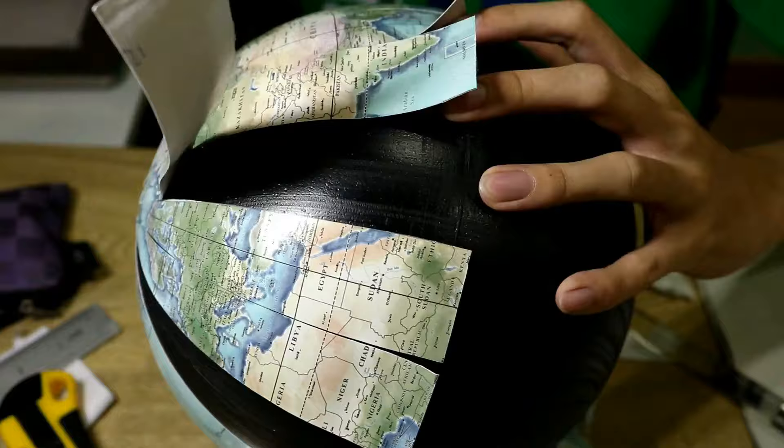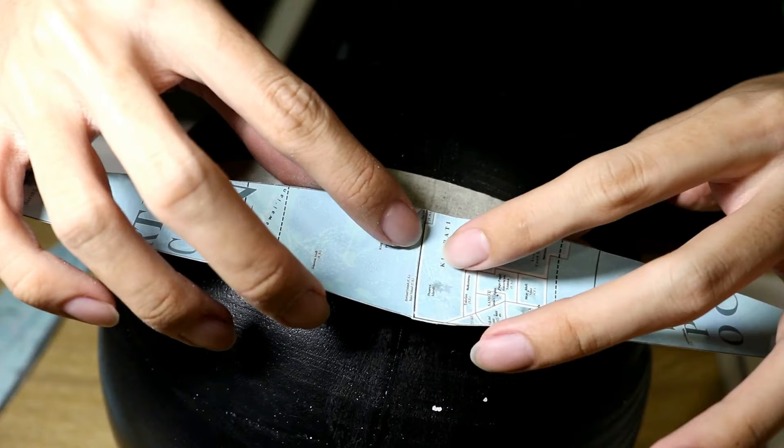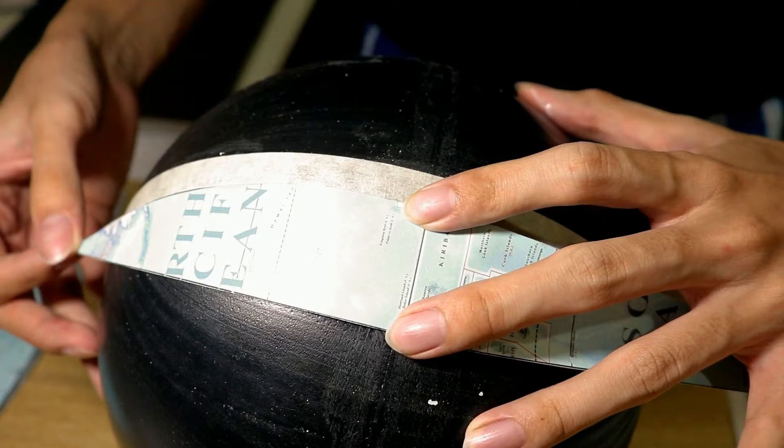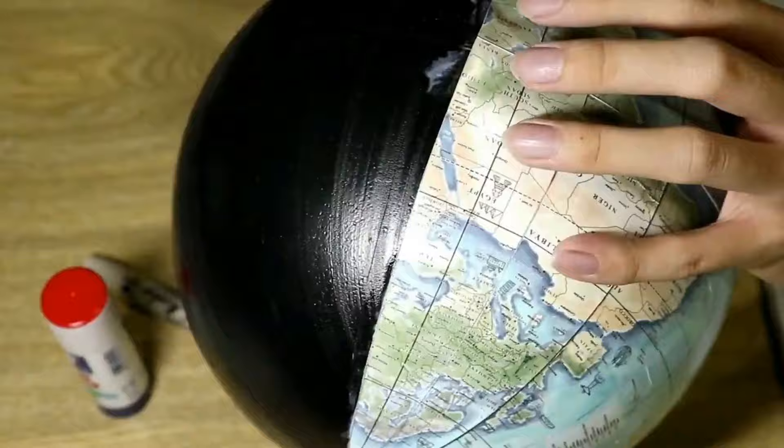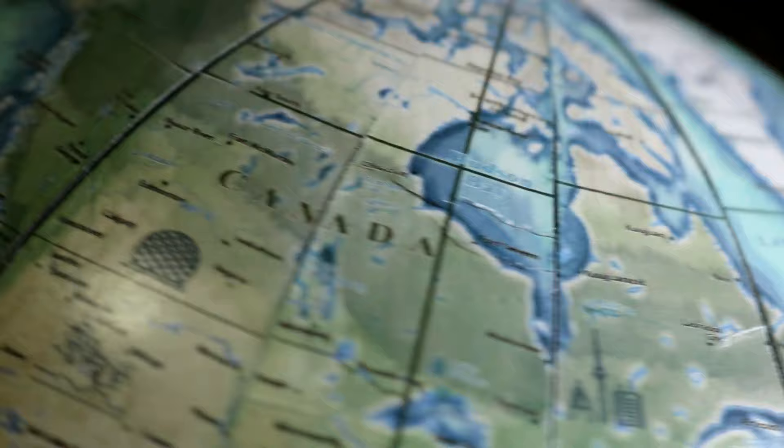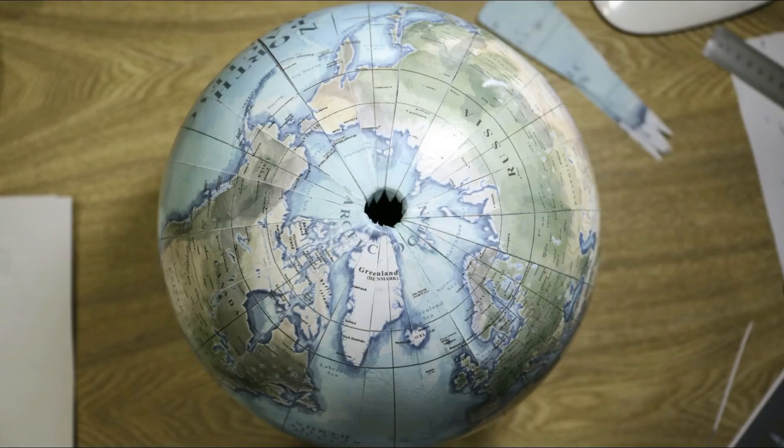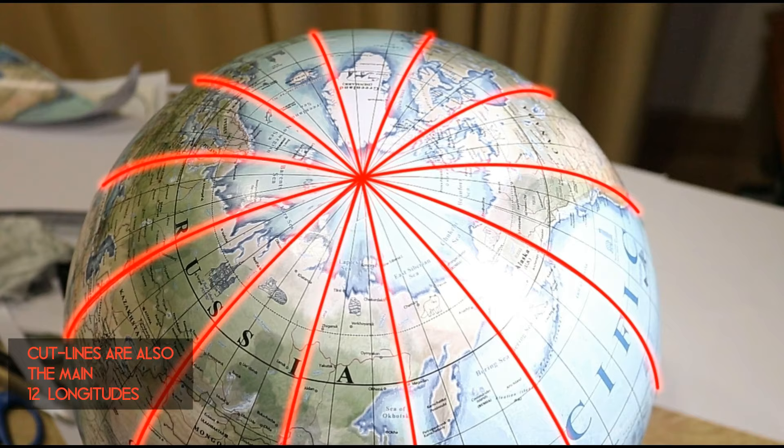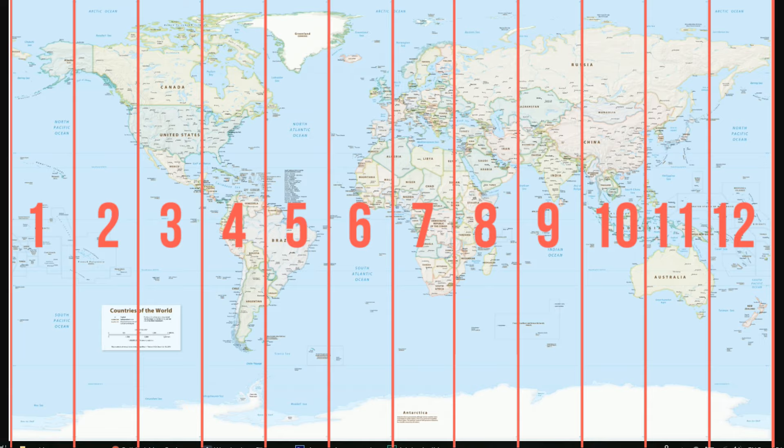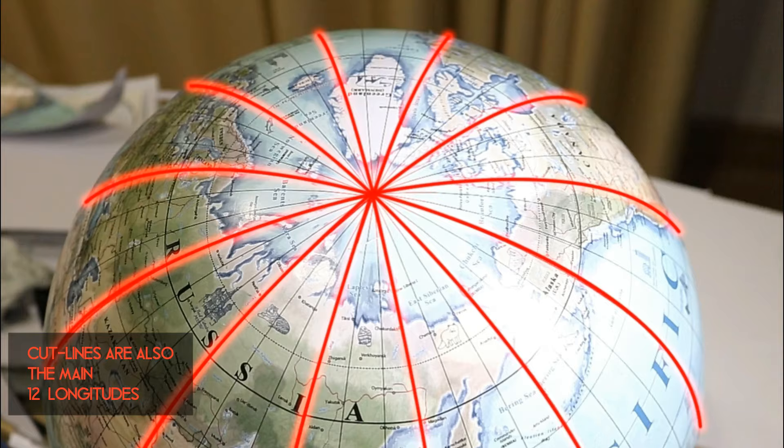So I peel that all off and start over. For the second attempt, I thickened the main longitude lines in Photoshop. And instead of applying gores for each hemisphere, I stick the top and the bottom gore together and apply it straight from the north pole down to the south pole. And the latitude lines still didn't line up. This time it even worse. Also, even after I thickened the main longitude lines, it still looked confusing because the gore cut lines mistakenly appear to be more longitude lines.